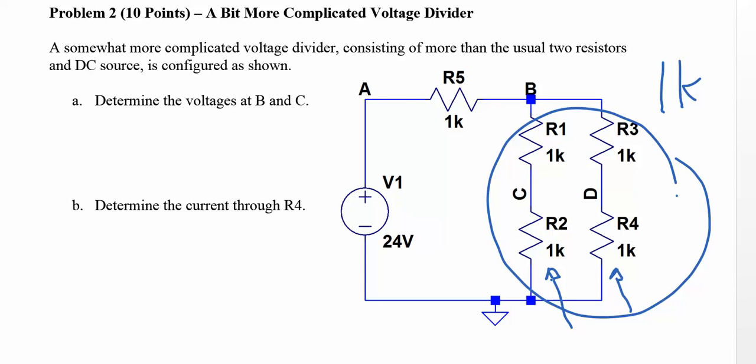So they add up to 1k, which gives us a very simple voltage divider where you have a 1k resistor here and a 1k resistor over here. So the voltage at B must be half of the 24, so the voltage at B equals 12 volts.